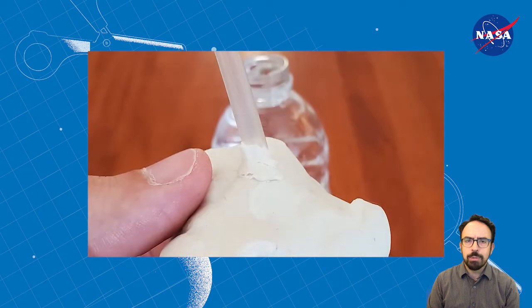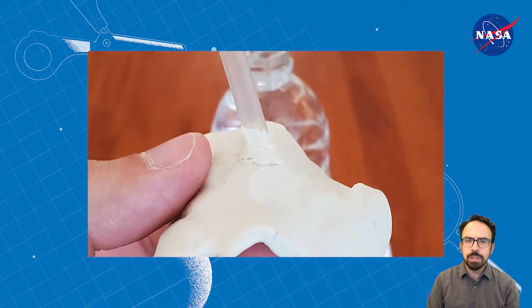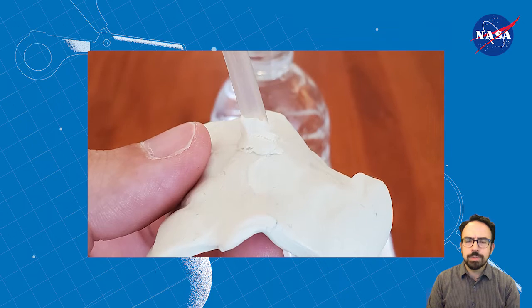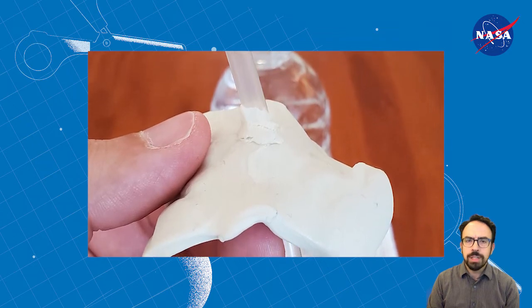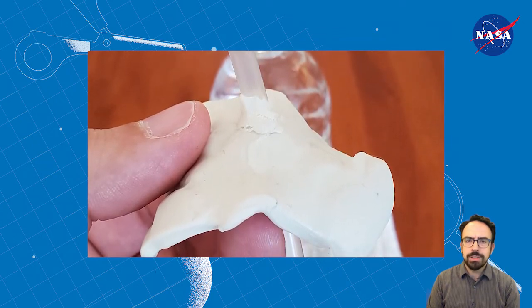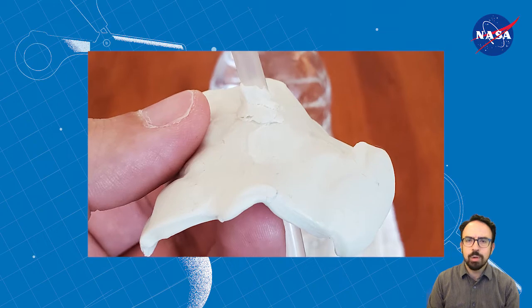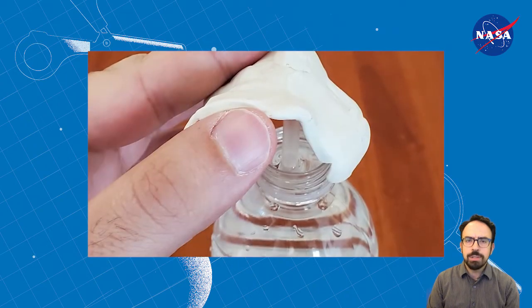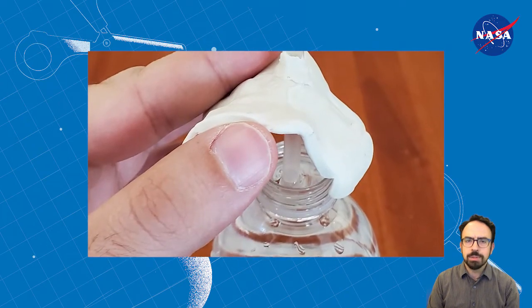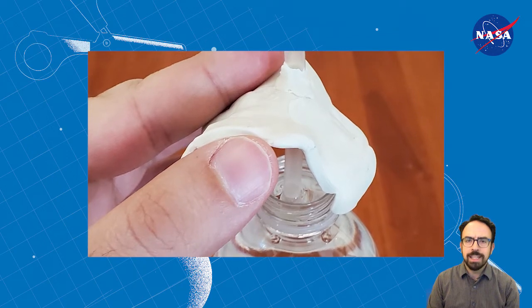Now wrap the straw with clay, leaving a few inches of straw above and below the clay. Be careful not to squeeze the straw closed. Make sure the clay, putty, or whatever sealant you use fills any gaps between the hole and the straw. Try to keep the straw as close to vertical as possible as you put it into the bottle and seal the top.